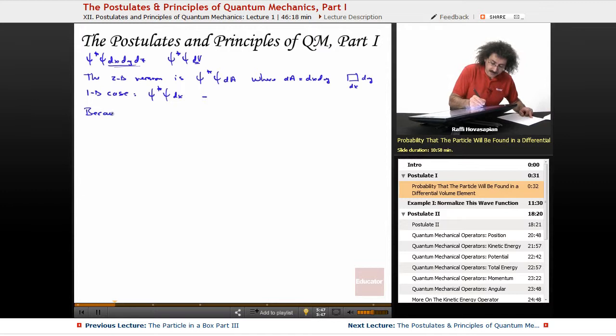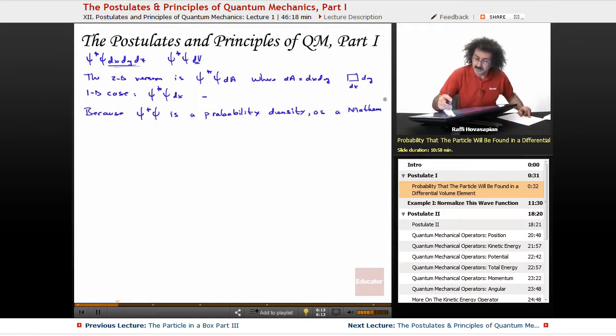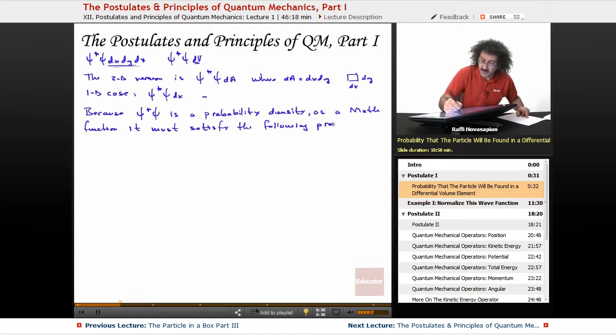Because Ψ*Ψ is a probability density—or if you want to refer to it as a probability, that's fine—as a mathematical function, it must satisfy certain properties. We are dealing with mathematical functions here, and certain things have to be the case.